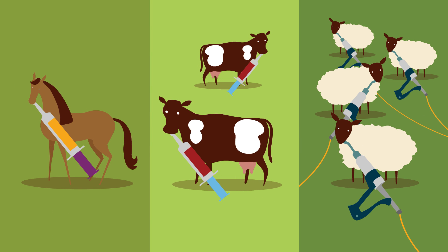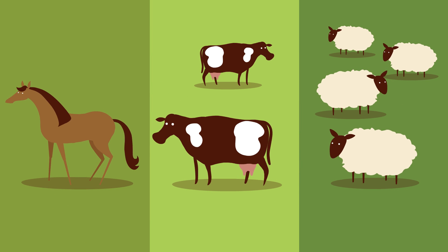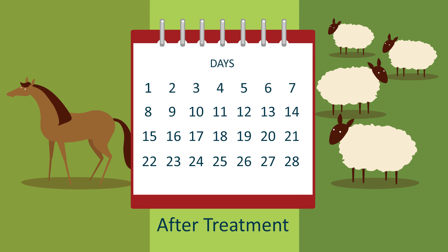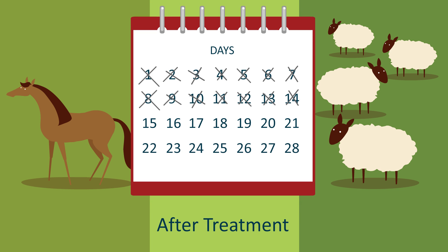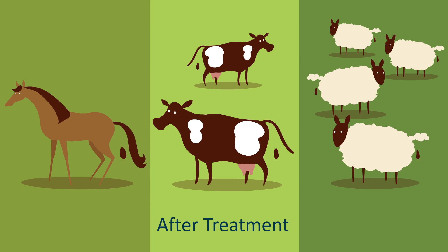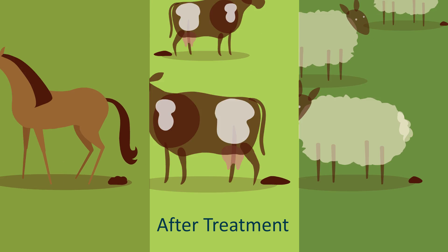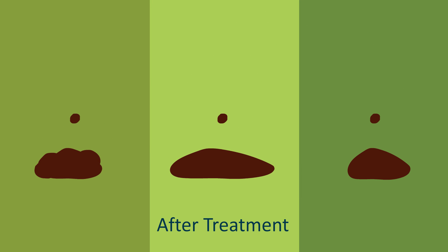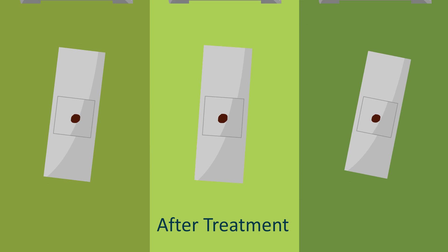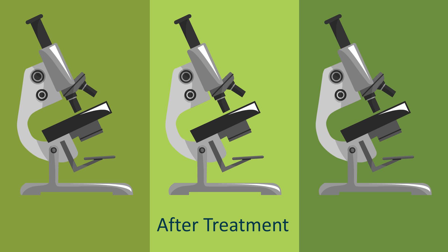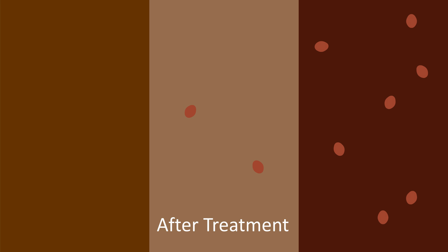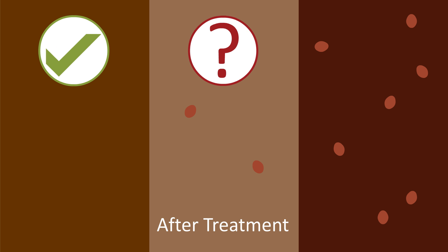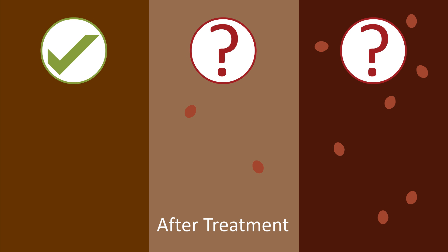Testing for the efficacy of an anthelmintic can be done as easily as looking at faecal samples 7 to 14 days after treatment. Any eggs seen 14 days after treatment is an indication that the drugs may not be working as well as they should be. If eggs are reported, then further examination would be required.